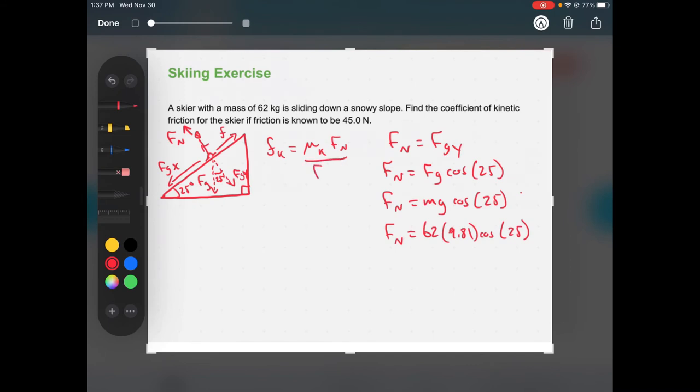Once we solve this for Mu K, that's what we're looking for. Fk, which we know is 45, divided by this equation we just got, which I'm going to leave as Mg cosine of theta. So for our solution, 45 over 62 times 9.81 times cosine of 25. Remember, you do want to make sure that your calculator is in the right mode when you do this. I know my calculator's not showing up here, but 0.082 is our answer.